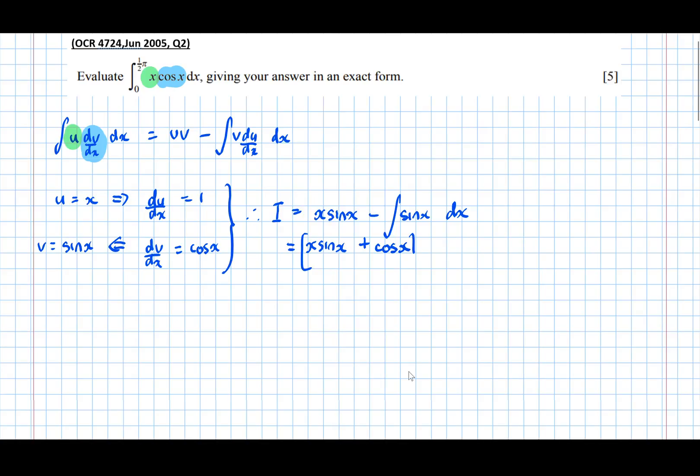And now, we put limits around it, so between pi over 2 and 0. And strictly speaking, we should have put limits there as well. Between pi over 2 and 0 equals, so subbing in pi over 2, pi over 2, sin of pi over 2, plus cos of pi over 2, take 0, sin 0, plus cos of 0.